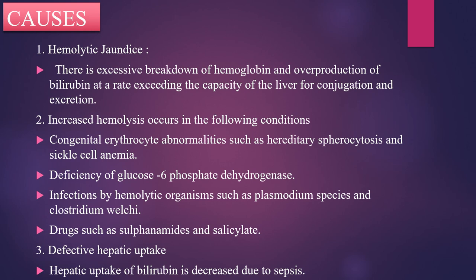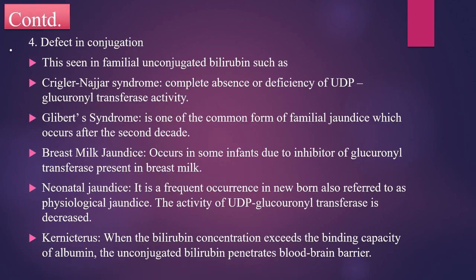The next cause of retention jaundice is defective hepatic uptake, where the hepatic uptake of bilirubin is decreased due to sepsis. Another important cause of retention jaundice is defective conjugation, which is seen in familial unconjugated hyperbilirubinemia such as Crigler-Najjar syndrome. In this condition, there is complete absence or deficiency of UDP-glucuronyl transferase activity.